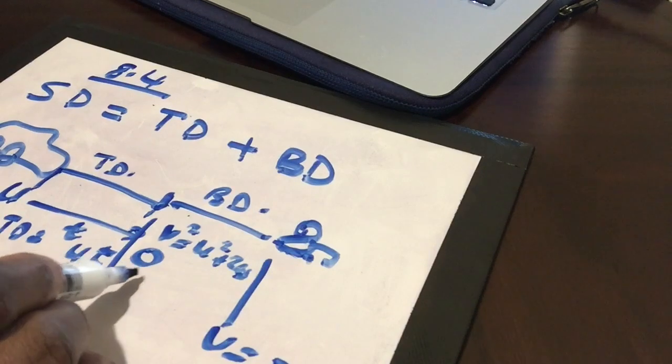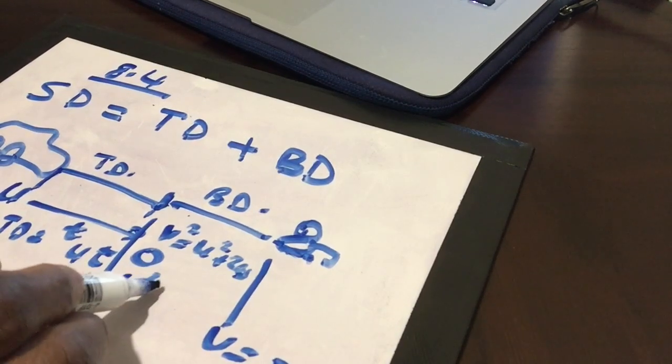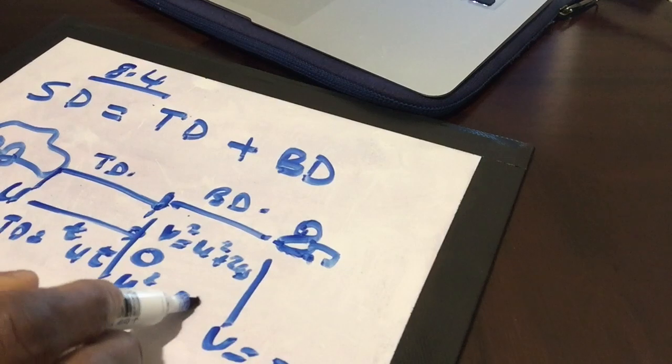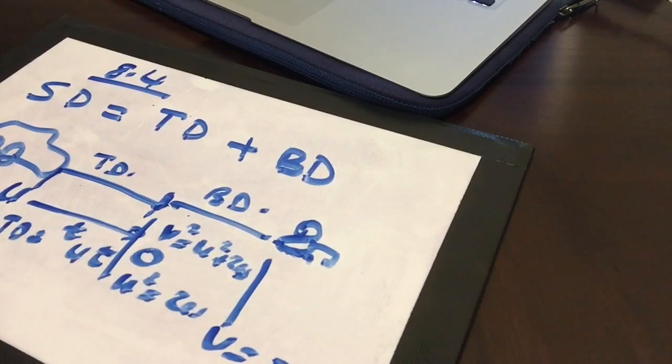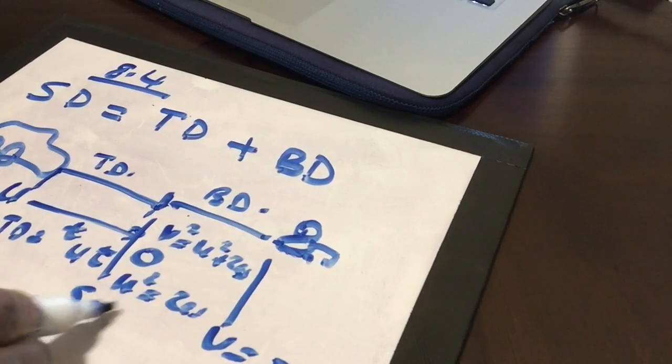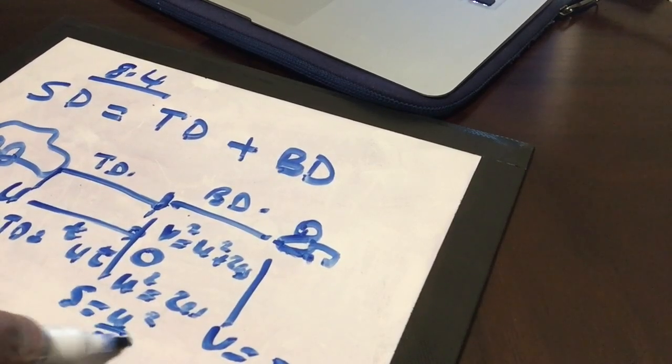So you're going to then have u squared, okay, equals 2as. Because your acceleration will also be negative. So that will cancel each other out. So you then have s equals u squared over 2a.